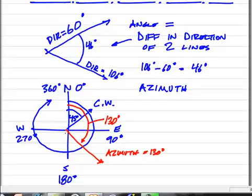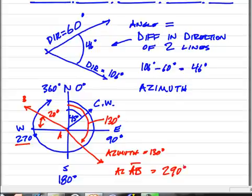Let's consider something that is 20 degrees above west. If it's 20 degrees above west, it's going to be 20 past or clockwise from, increasing beyond 270. So this line, let's call this line AB. The azimuth of AB will be 290 degrees. So azimuth increases in the clockwise direction.